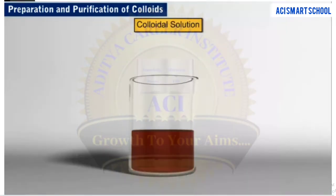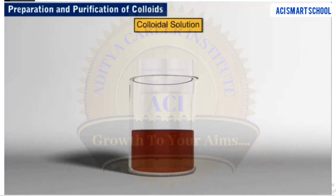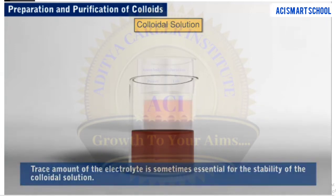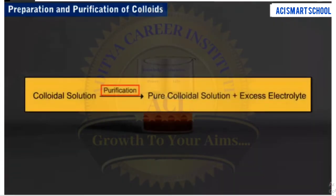The colloidal solutions prepared by the methods we just discussed are generally associated with some soluble impurities and some excess of electrolyte. Though a trace amount of the electrolyte is sometimes essential for the stability of the colloidal solution, an excess of it causes coagulation of the sol. That is why the salts obtained are subjected to purification to get rid of excess electrolyte.